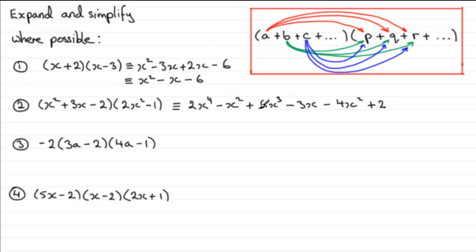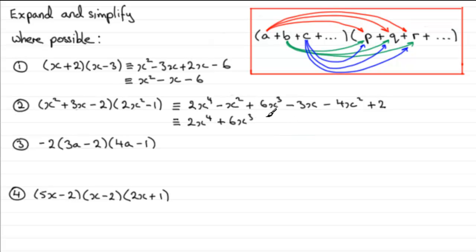We've got a lot of terms and we can simplify by grouping equivalent terms. There are no other X to the power 4 terms so that's just 2X to the power 4. The X cubed term is just 6X cubed. For X squared terms we've got minus X squared minus another 4X squared, giving minus 5X squared. For X terms we've just got minus 3X, and the constant is plus 2.